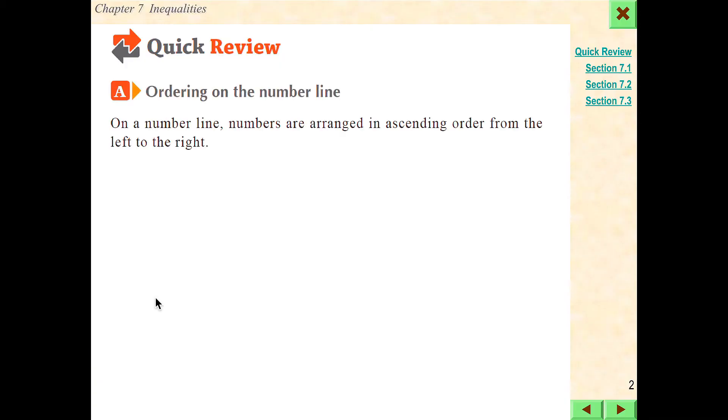First of all, you should know the ordering on the number line. On the number line, numbers are arranged in an ascending order from the left to the right. That means this side will be larger, this one will be smaller. So basically, you should know this is the basic.